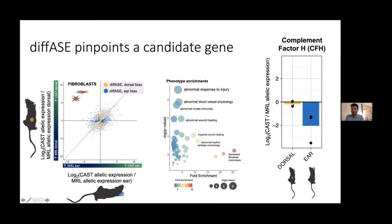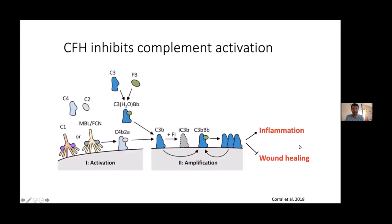In the dorsal wound, the ratio between Castaneus and MRL alleles of CFH was equal. But in the ear wound, we see fourfold higher expression from the MRL allele — exactly the pattern we hoped to see with DIF-ACE analysis. CFH is involved in the complement pathway. At a wound site, complement induces inflammation which protects from infection but suppresses wound healing. CFH is an inhibitor of this pathway, so it shifts the balance from inflammation over to wound healing.